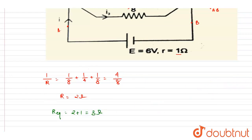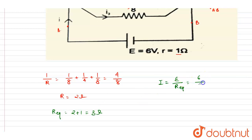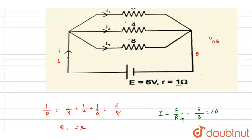Now that we have the equivalent resistance, we can find the current. It is simply EMF divided by total resistance: 6 divided by 3, which is 2 amperes. So the current through the battery is 2 amperes.